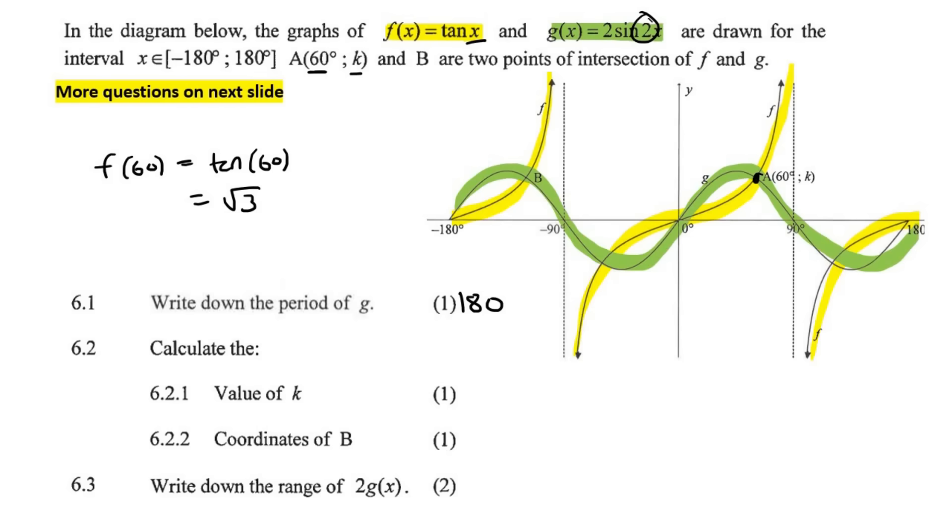And you get square root 3. You could have also used this equation. Absolutely fine. And so that will just give us square root 3. And of course, you could also write it in decimals. If you do it in decimals, it'll be 1.73.